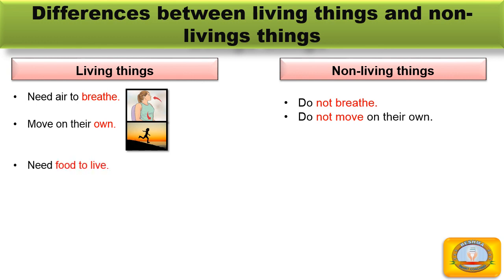Third difference: living things need food to live. Plants make their food with the help of sunlight, water, and minerals. Animals eat grass, plants, or other smaller animals. Birds eat fruits, grains, and insects. Non-living things do not need food.